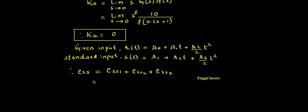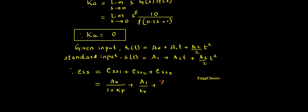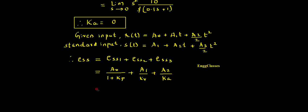By comparison: ESS1 for step input uses formula a0 / (1 + Kp); ESS2 for ramp input uses A1/Kv, so here it is a1/Kv; and ESS3 for parabolic input uses A3/Ka — comparing the two forms A3 equals a2, so it is a2/Ka. Now I just have to substitute the values we found.